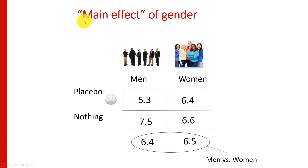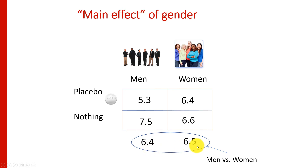When we're talking about the main effect of gender, that's gender on average across the levels of the other factor — or ignoring the other factor. Quite literally, we take the average of the two different conditions. Men with 5.3 and 7.5 gives an average of 6.4. Women with 6.4 and 6.6 gives an average of 6.5. So the main effect of gender is the comparison between these two means — men on average across levels of the placebo versus women on average across levels of placebo, ignoring the other factor.